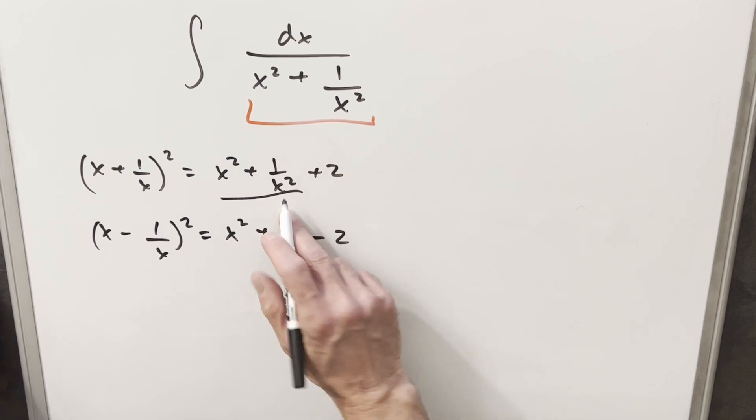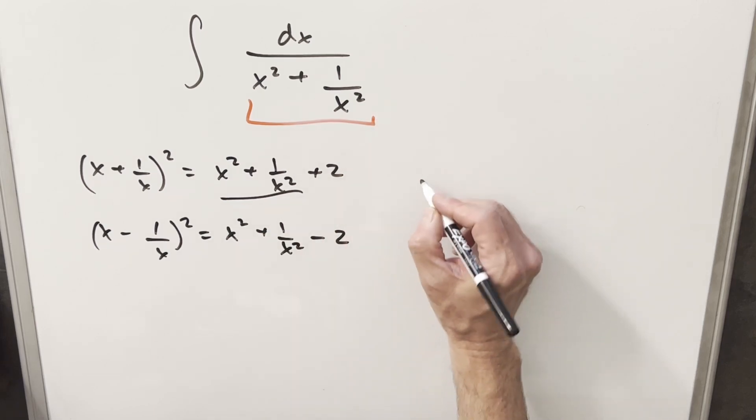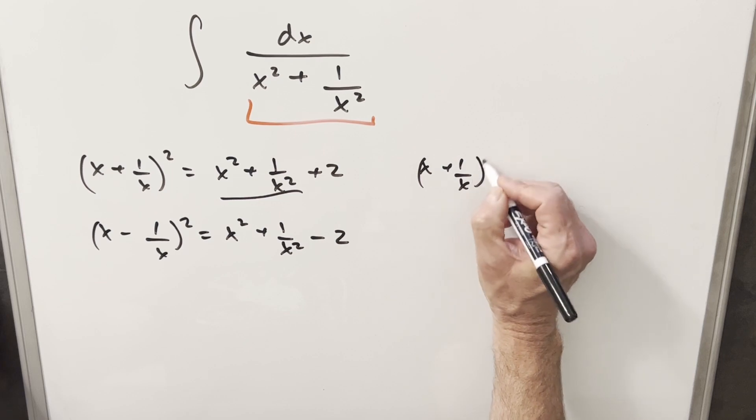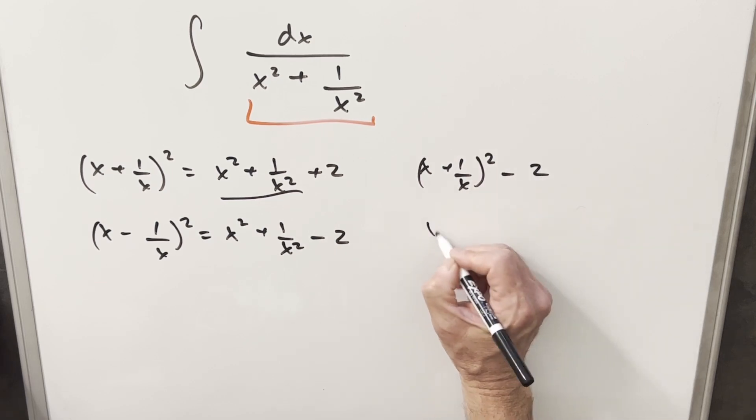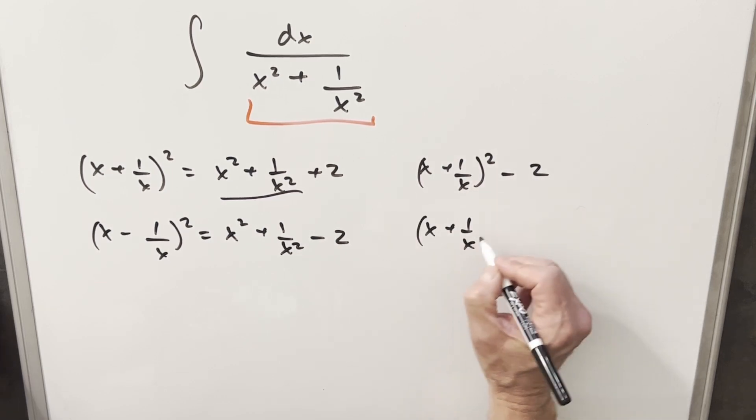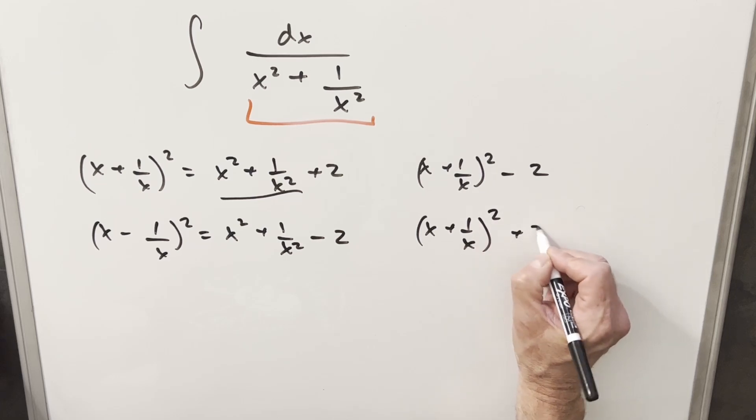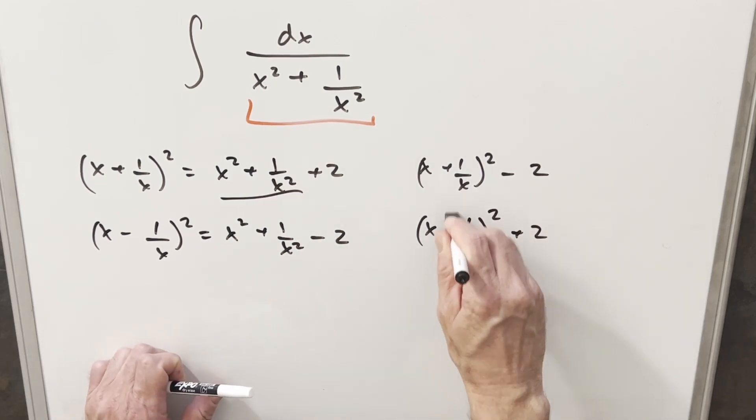Just solving for this piece here, I can write our denominator as x plus 1 over x squared minus 2, or we can also write it as x minus 1 over x squared plus 2. Sorry, I meant to write a minus right here.